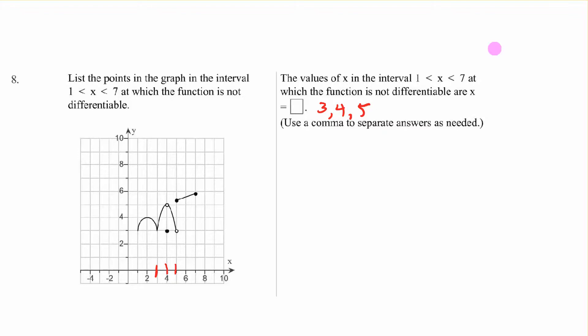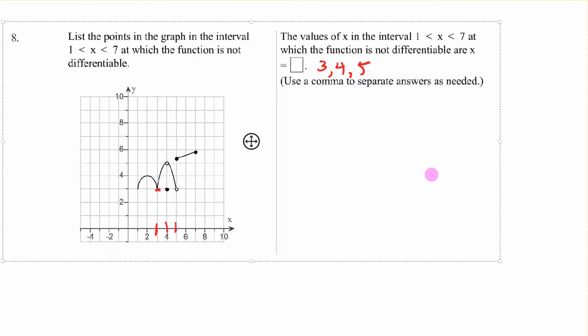Number 8. We have an interval from 1 to 7. Where is this thing not differentiable? Look here, we have a sharp point. Remember we said it's not differentiable at sharp points, so at x = 3. At 4, it's not defined there, so that's not differentiable. And at 5, same thing. So 3, 4, 5 are the places where the function is not differentiable.